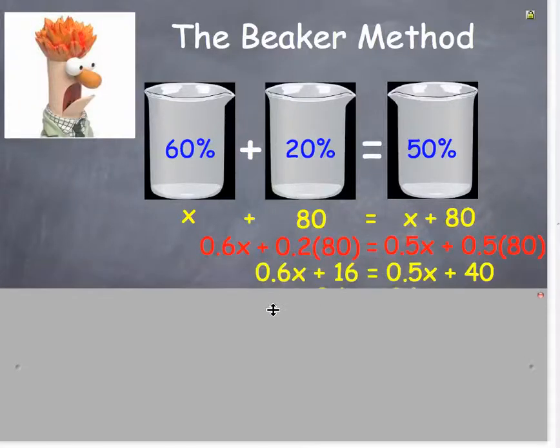And we will get 0.6x plus 16 equals 0.5x plus 40.